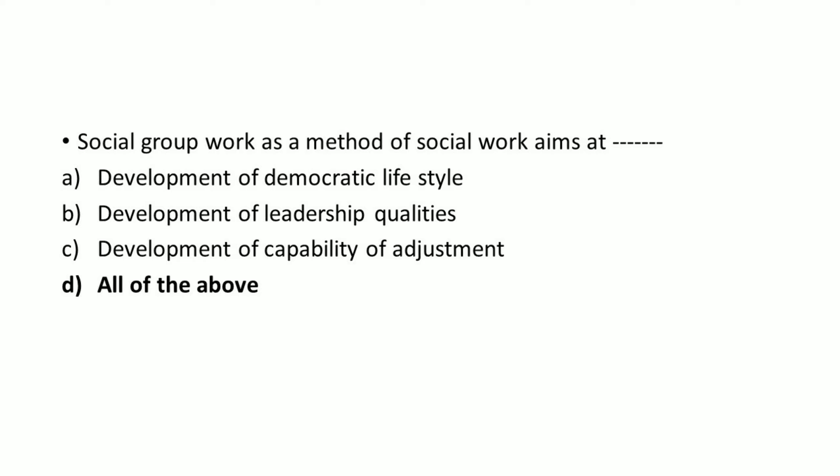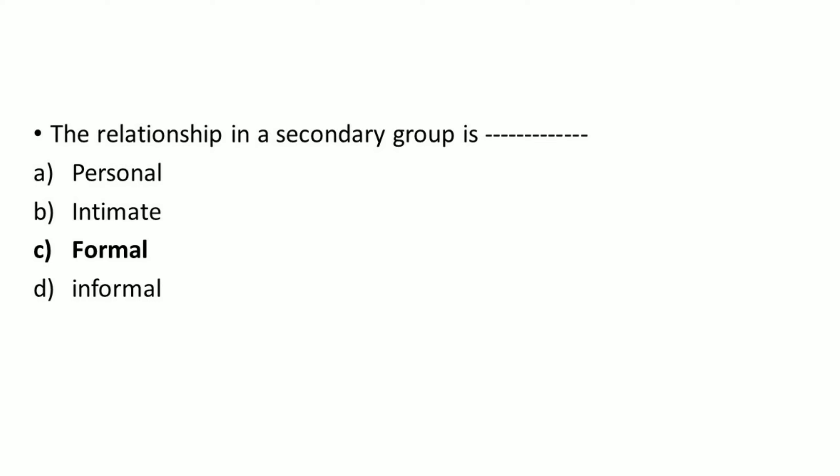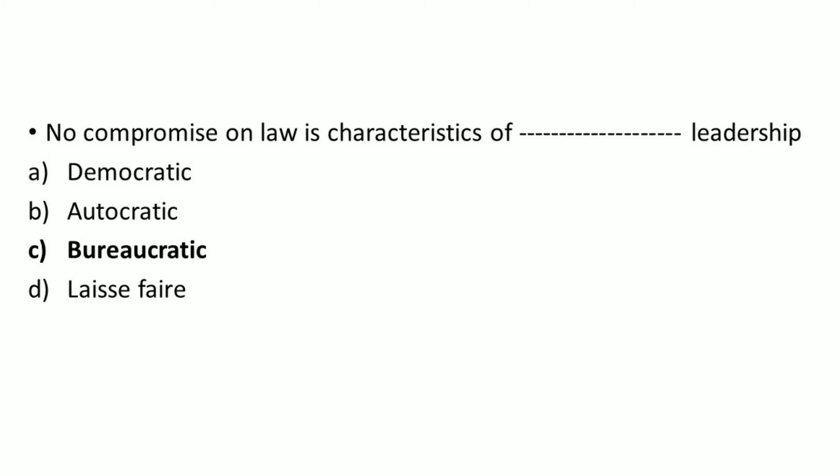Social group work as a method of social work aims at: right answer, all of the above — development of democratic lifestyle, development of leadership qualities, and development of capability of adjustment. The book 'Social Group Work: A Helping Process' is authored by: right answer option D, B.G. Konopka. This was included twice because it is important to remember. The relationship in a secondary group is: right answer option C, formal.